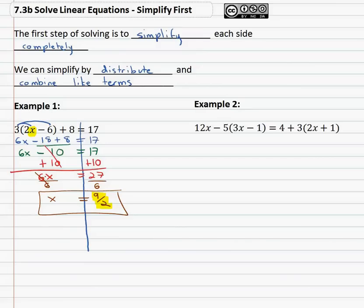Let's try one more that's a little more involved but follows much the same pattern. 12x minus 5 times 3x minus 1 equals 4 plus 3 times 2x plus 1. As always we will balance on the equal sign as we attempt to find out what is the value that x represents in all three of these locations in this equation. Again, we start by simplifying first.